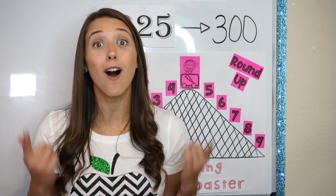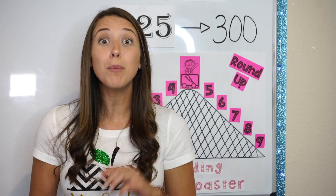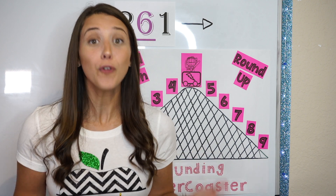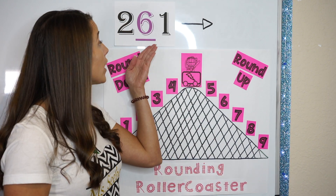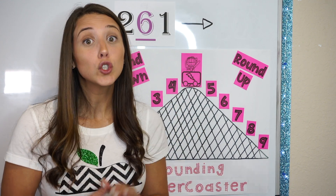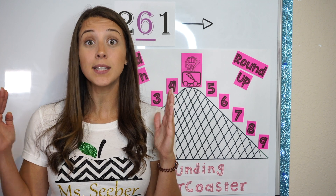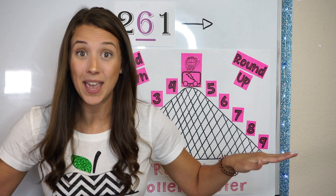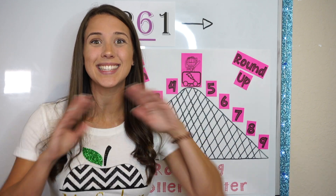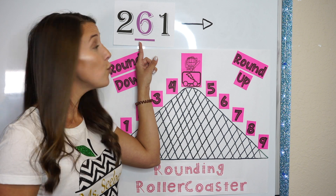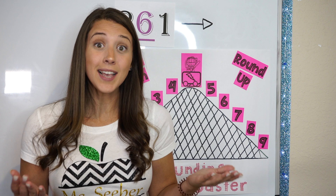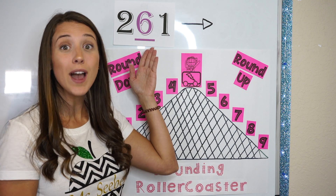All right, superstars, you guys are doing an awesome job at rounding. Should we do one more practice problem before you guys meet my special guest? Here is my last practice problem. First, we need to find the place value that we are rounding — we are rounding my tens place. We are rounding to the nearest ten, so all of the numbers before my tens place, like hundreds or thousands, stay exactly the same. The only numbers that change are the numbers after the place value that we are rounding. My 2 stays the same because it is before the place value we are rounding. Looking to the right, I can see in my ones place is the number 1. Since 1 is 4 or less, we let it rest. So 261 rounds to 260.